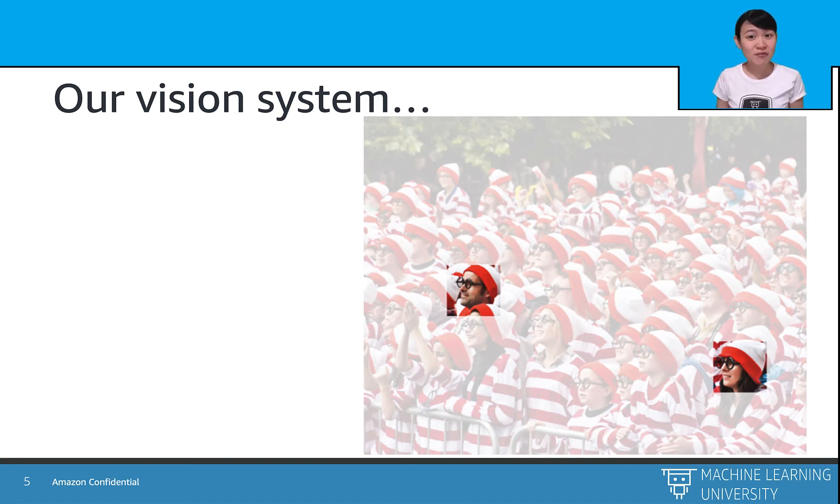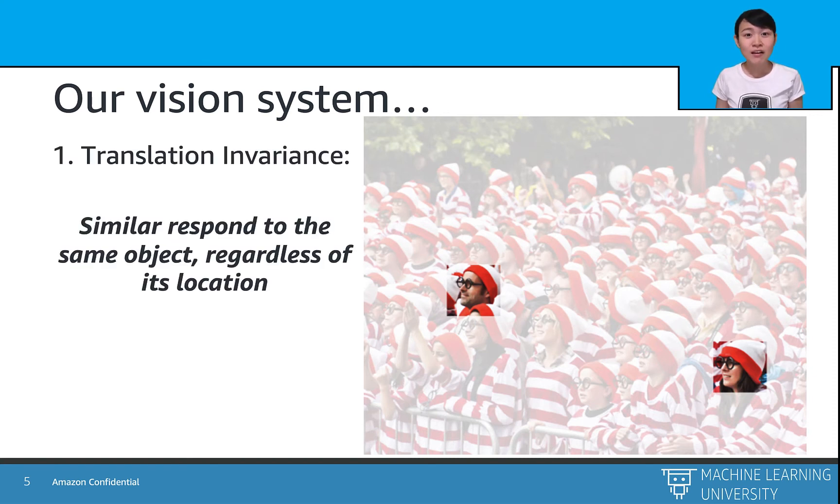These two intuitions we have been discussing could be made more concrete, yielding a few key principles of building neural networks for computer vision. First is translation invariance, which means our vision system responds similarly to the same object, no matter where it appears on the image. Like in this picture, the left Waldo and the right Waldo are both Waldos.